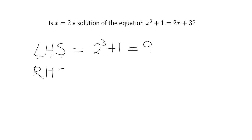What about our right hand side of the equation? Well that'll be 2 multiplied by 2 plus 3. So when x is equal to 2 the right hand side of our equation is 4 plus 3 which is 7.